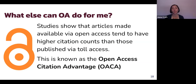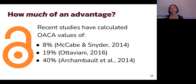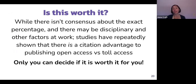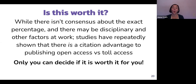There's a growing body of literature showing that articles made available through open access tend to have higher citation counts than those published via closed or toll access — this has been called the open access citation advantage. Studies have calculated varying percentages of higher citations for open articles, ranging from 8 to 40 percent, with a lot of variance depending on disciplinary and other factors. Studies repeatedly show there is an advantage to publishing openly, though as part of academic freedom, you as a scholar get to decide where your work goes.